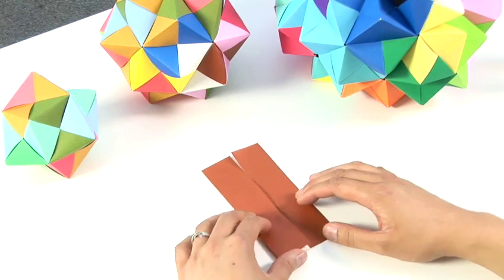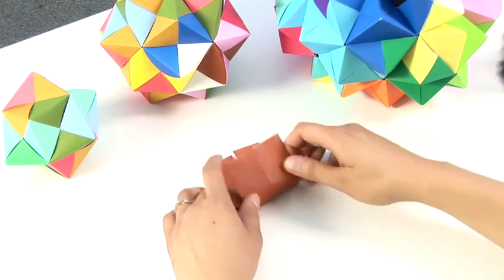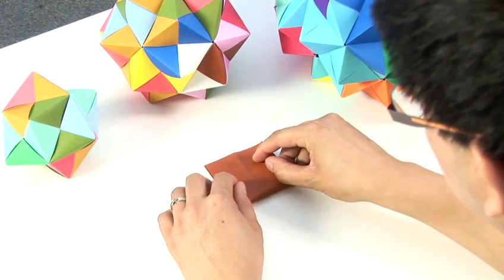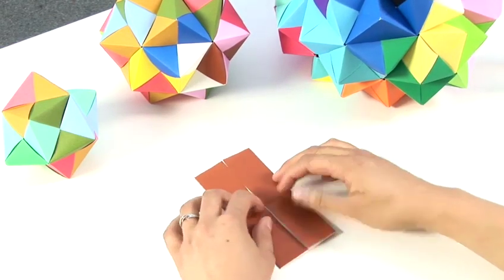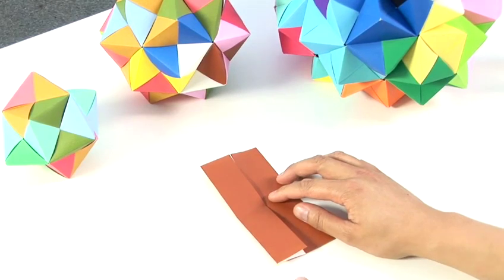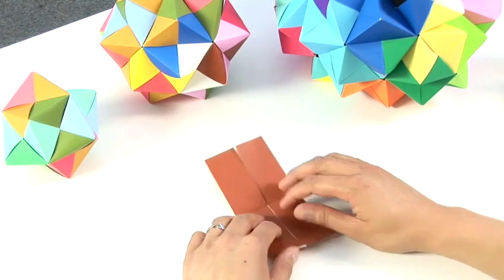Turn it through 90 degrees and fold in half. We're now going to fold the edges again into the middle to form a square.